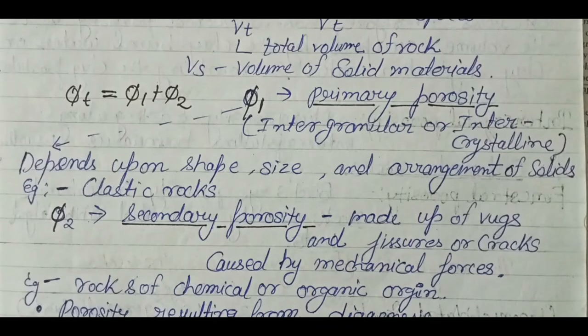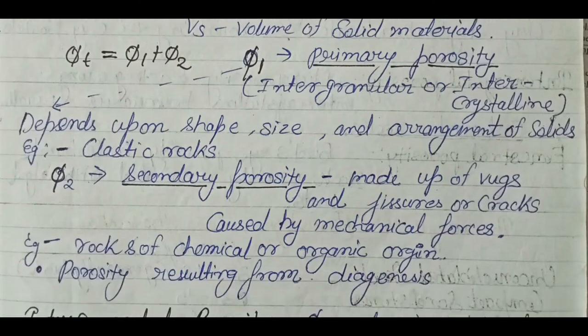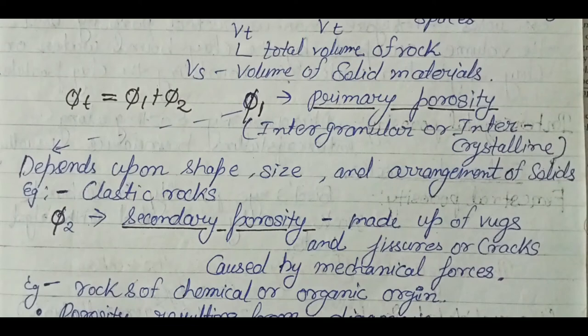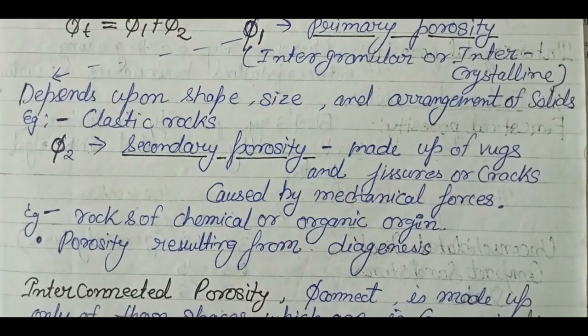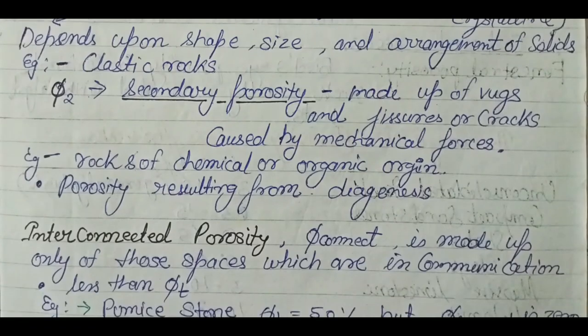Primary porosity is intergranular or intercrystalline porosity caused by the arrangement of grains — it is not related to fractures or cracks. Primary porosity depends upon the shape, size, and arrangement of solid minerals; examples include clastic rocks. Secondary porosity is made up of vugs, fissures, and cracks caused by mechanical forces or chemical/diagenetic processes.